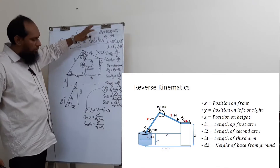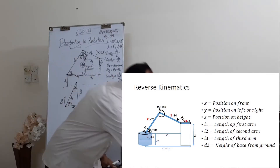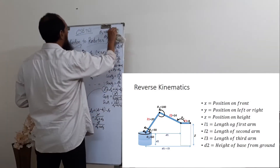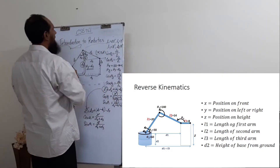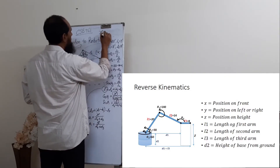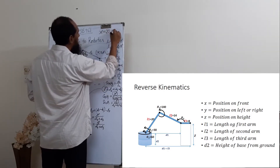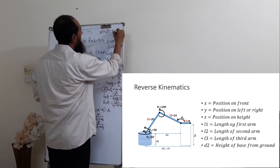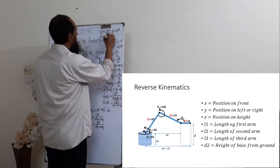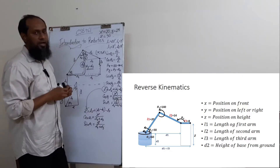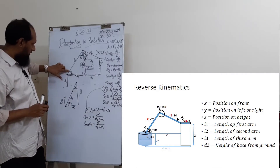Now, we have X, Y, and Z. We have to calculate theta 1, theta 2, and theta 3. Suppose X equals 20, Y equals 25, and Z equals 30. What should be the value of theta 1? What should be the value of theta 2? What should be the value of theta 3?